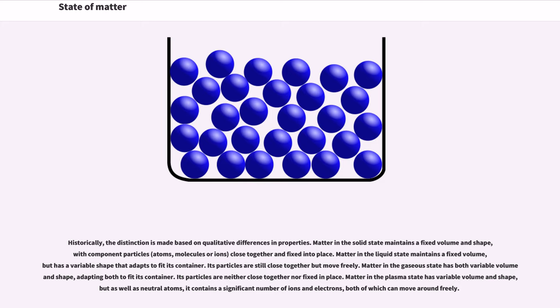Matter in the liquid state maintains a fixed volume, but has a variable shape that adapts to fit its container. Its particles are still close together but move freely.